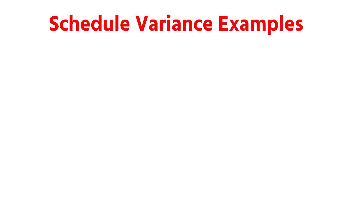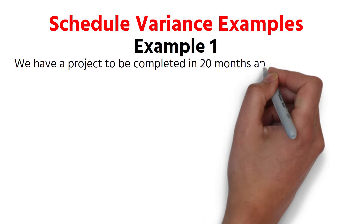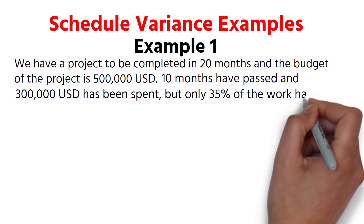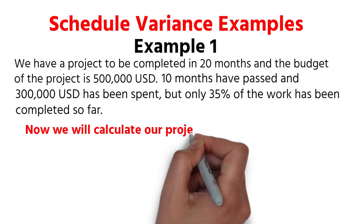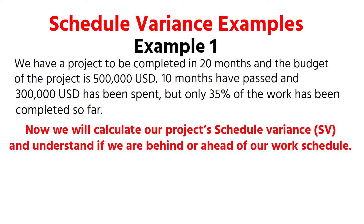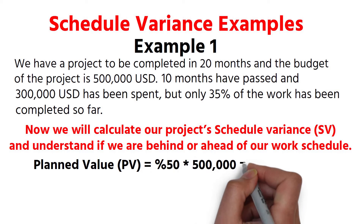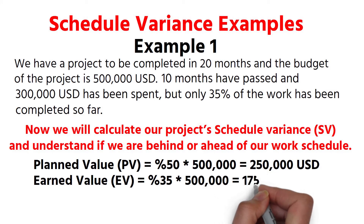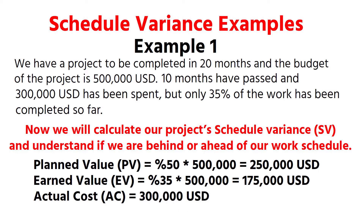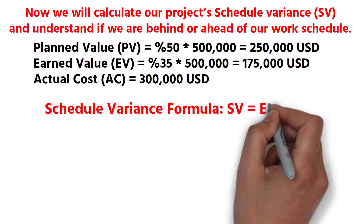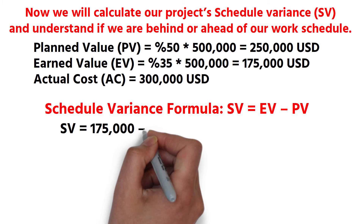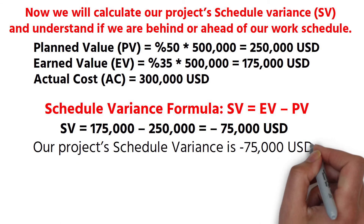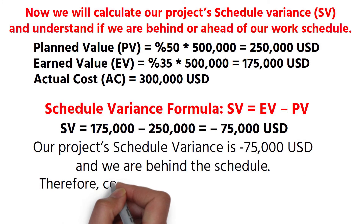Schedule Variance Examples. Example 1. We have a project to be completed in 20 months and the budget of the project is $500,000 US dollars. 10 months have passed and $300,000 US dollars has been spent, but only 35% of the work has been completed so far. Planned Value = 50% × $500,000 = $250,000. Earned Value = 35% × $500,000 = $175,000. Actual cost = $300,000. Schedule Variance: SV = EV − PV = $175,000 − $250,000 = −$75,000 US dollars. Our project schedule variance is negative $75,000 and we are behind the schedule. Therefore, corrective action should be taken to reach the targets.